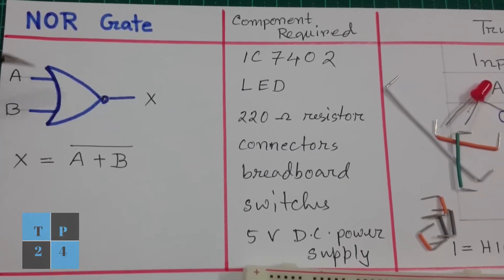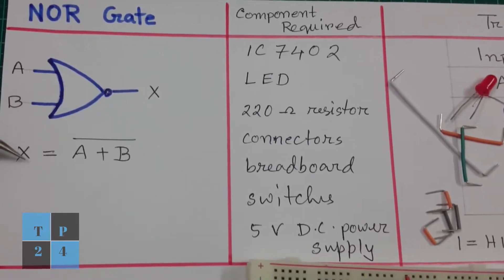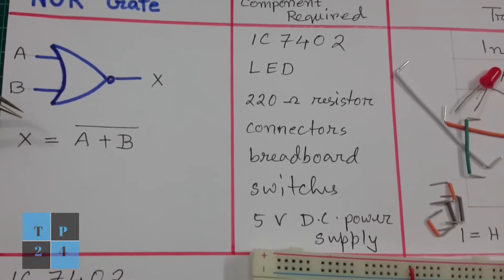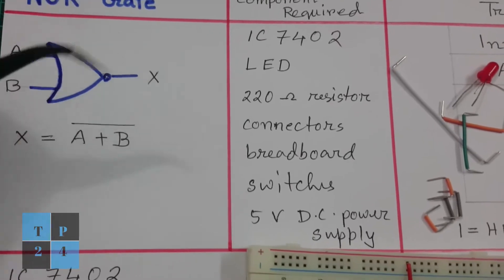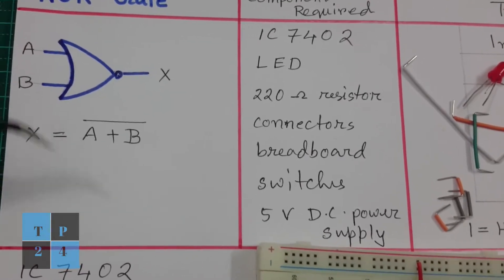This is the symbol of the NOR gate and this is the boolean expression that we use. It is actually the OR operation in inverted form.